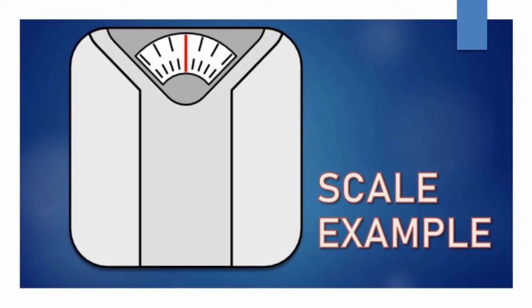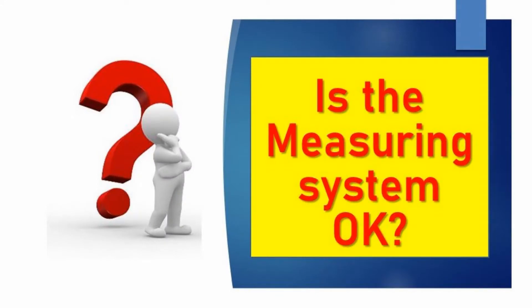Let's take the example of a scale. We are going on a diet, we are measuring our weight on a scale, and everybody has seen that sometimes the scale gives us one number, we jump on another scale, and we get a different number. But we haven't changed our weight — we haven't done any extra exercise or gone anywhere. So our weight has not changed. What of these two values is the true one? That is what we need to define with the Gauge R&R.